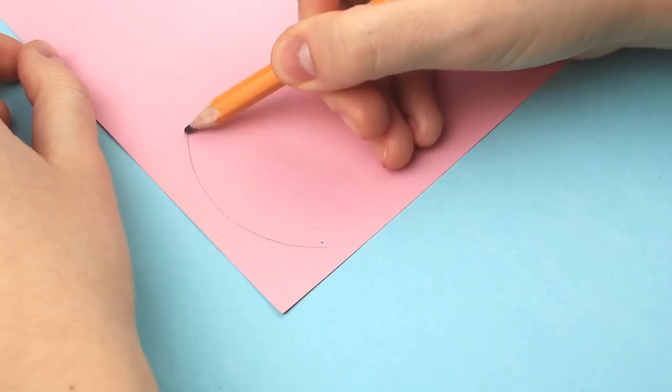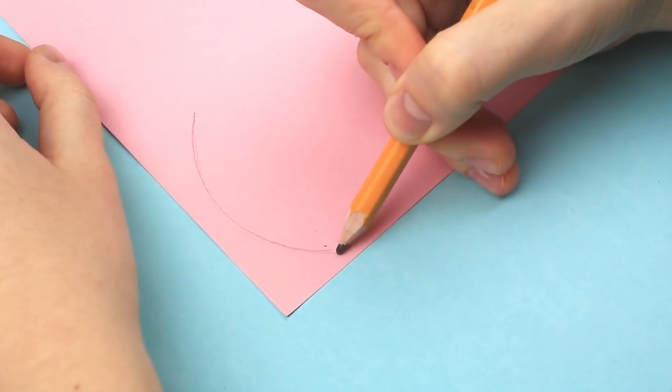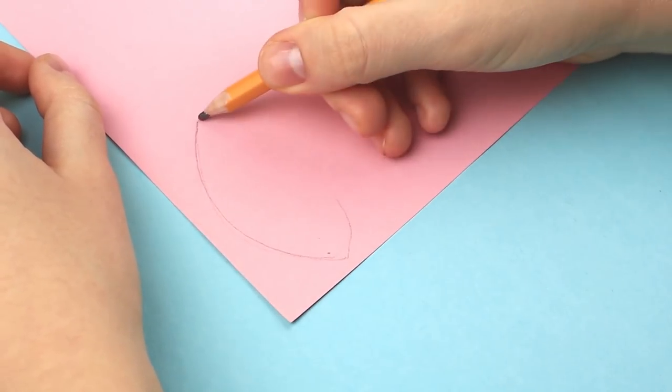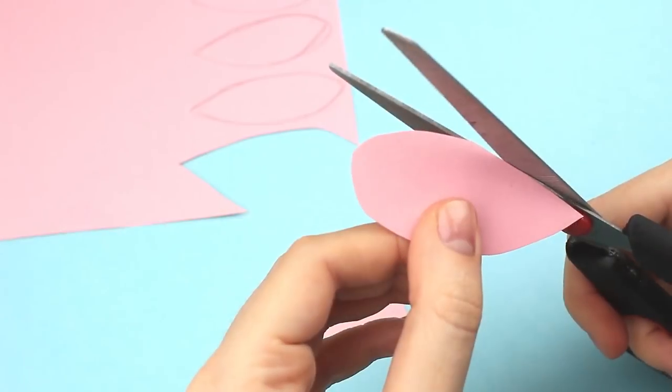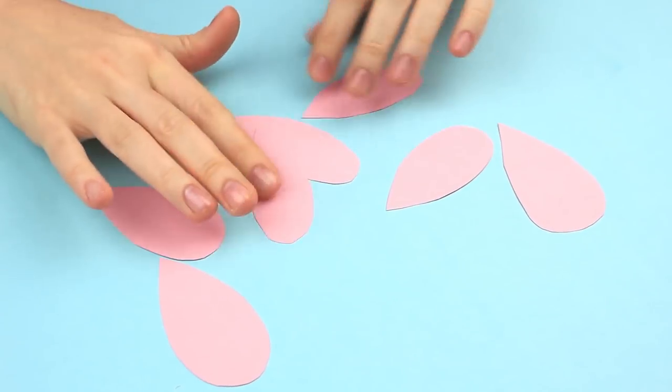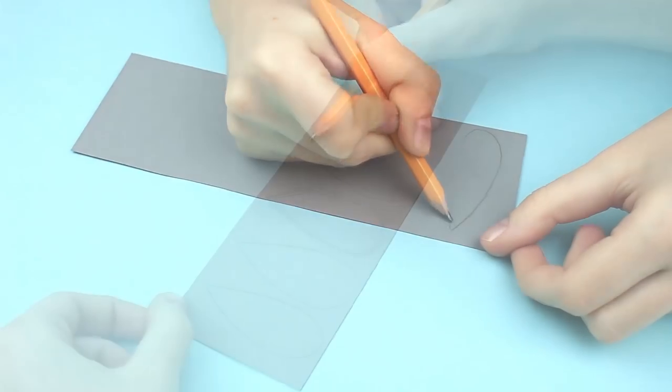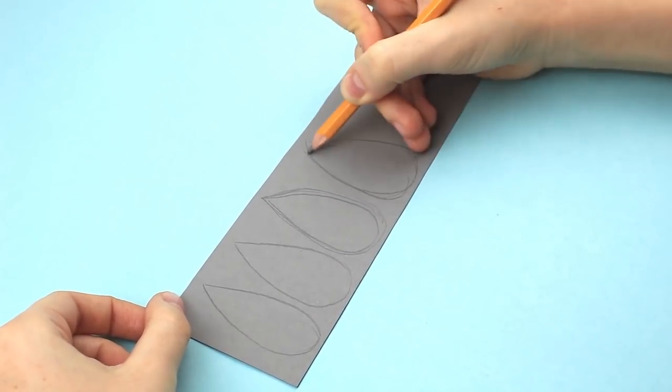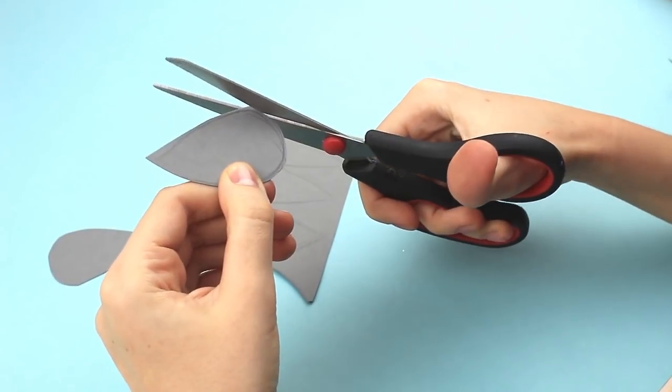Now, we'll show another interesting way of using paper craft ideas in gift wrapping decoration. Draw leaves on pink paper. Make a number of details. Cut them out. Repeat the details on gray paper. Gray matches pink well. Cut them out.